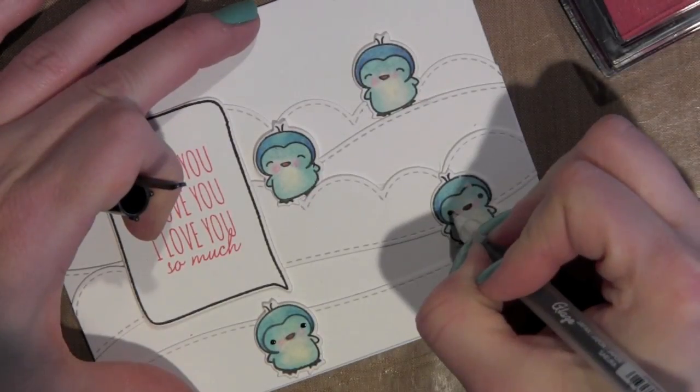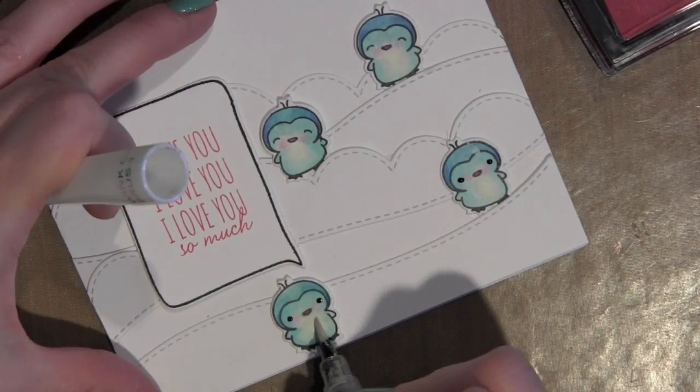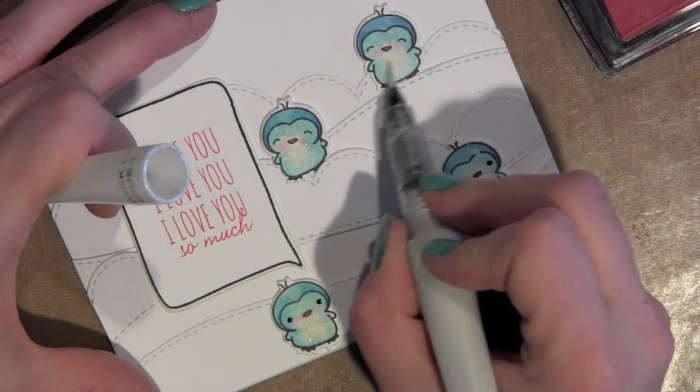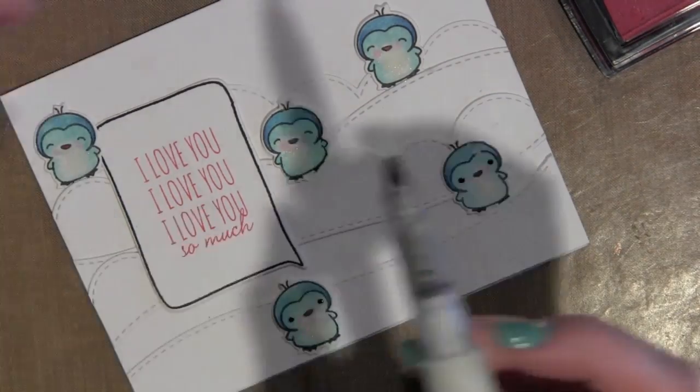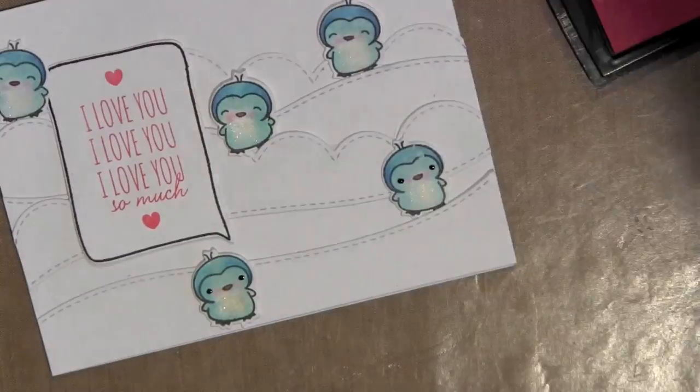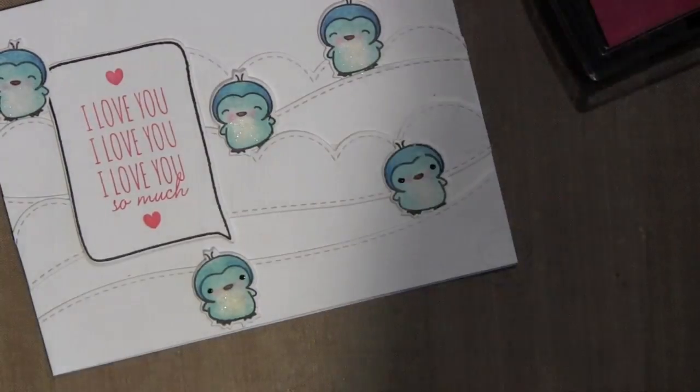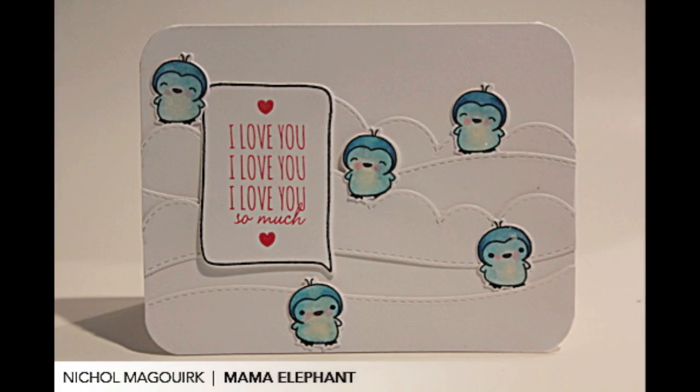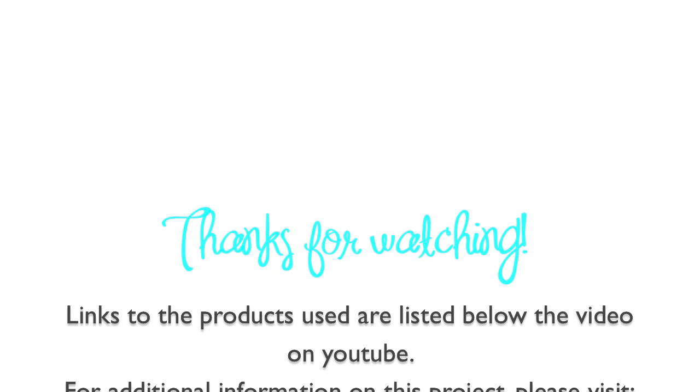One of the last things I did was take the Wink of Stella glitter brush tip marker and run it over the bellies of the birds just for a little bit of sparkle. Then I took that black Sakura gel marker and added a little detail to a couple of the bird's eyes. I hope you've enjoyed this video. Please check out the rest of the Mama Elephant projects on the Mama Elephant blog. Thanks for watching!